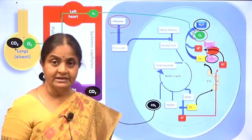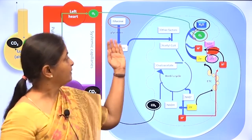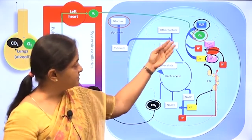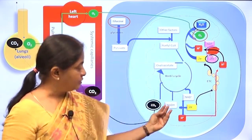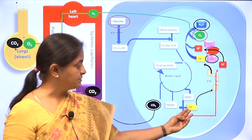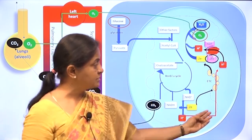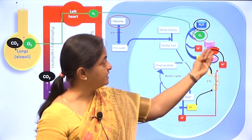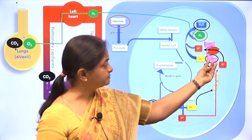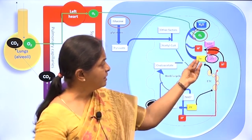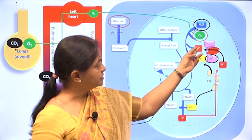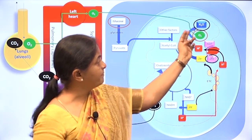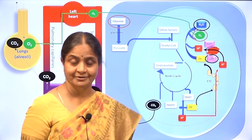To summarize: pyruvate enters the mitochondrion, carbon dioxide is produced, electrons and protons are generated, and they generate the ATP molecule. The protons and electrons are then consumed by oxygen to form water. Thank you for your attention.